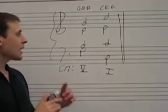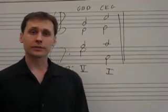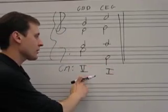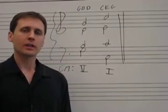Now, this type of cadence, V to I, is called an authentic cadence. Anytime you see a chord progression at the end of a piece of music that ends with V to I, that's an authentic cadence.